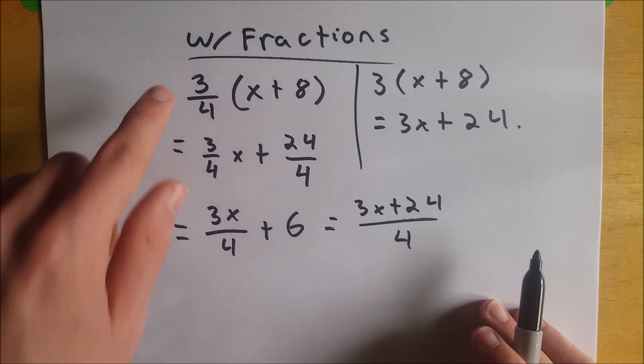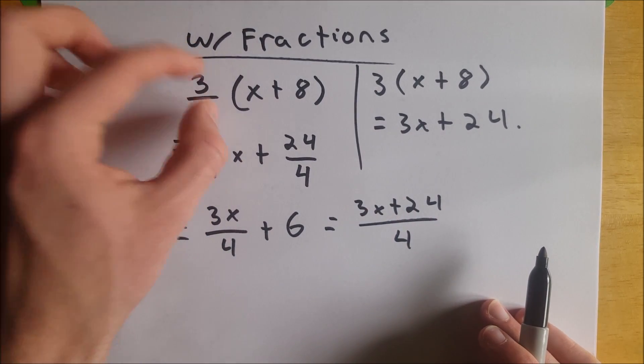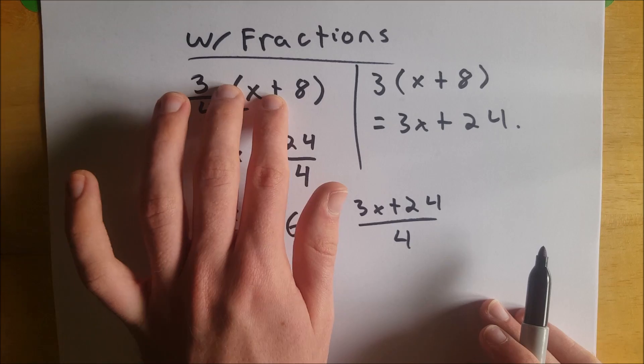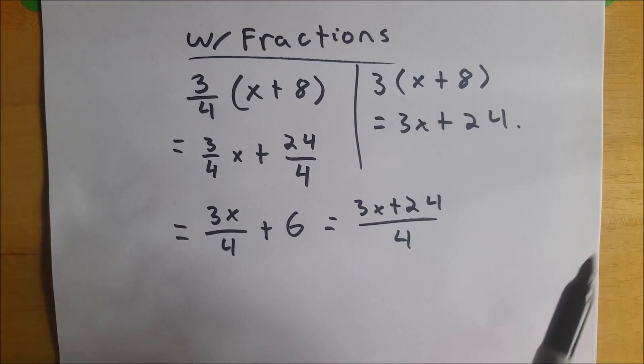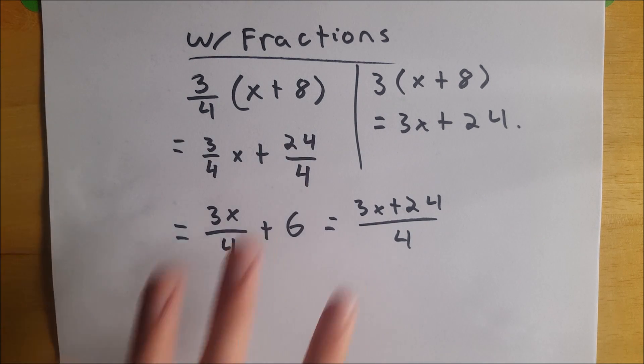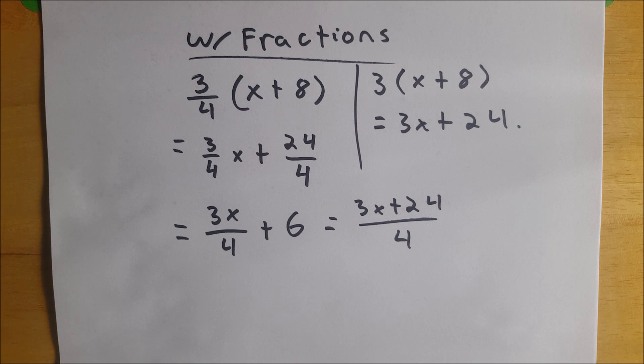But that's how it works. It's just the same as the normal distributive property. You just take your fraction, you multiply it by the first thing, by the second thing, by however many things you have inside of your parentheses. That's how you work the distributive property with fractions, and a couple different ways we could simplify it.